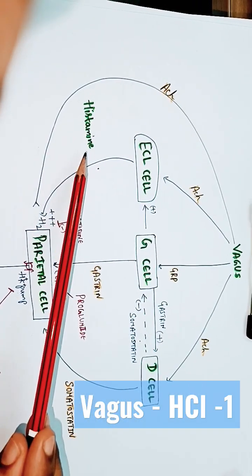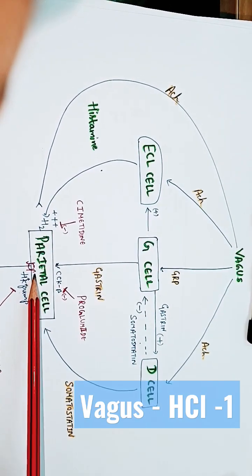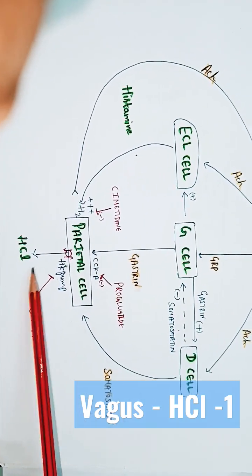Now, if you see here, out of the three, histamine is a very potent stimulator of parietal cells for HCL production.